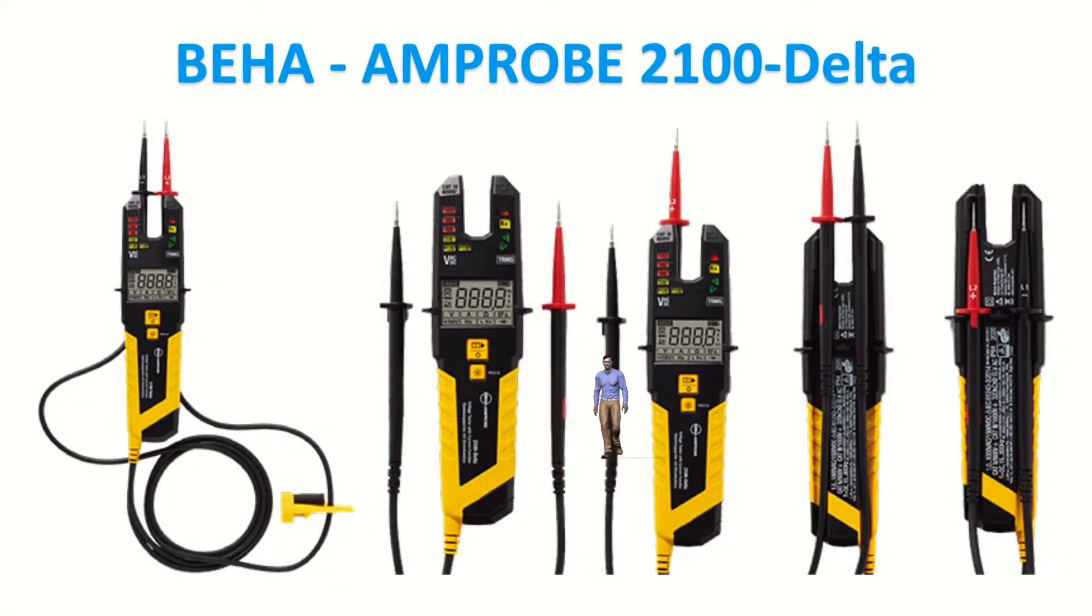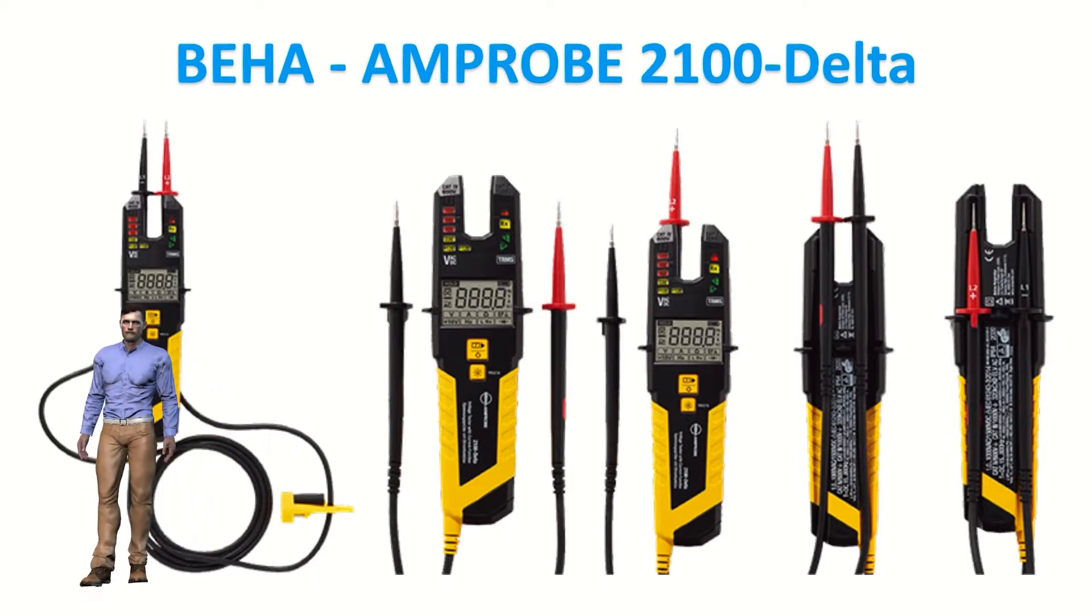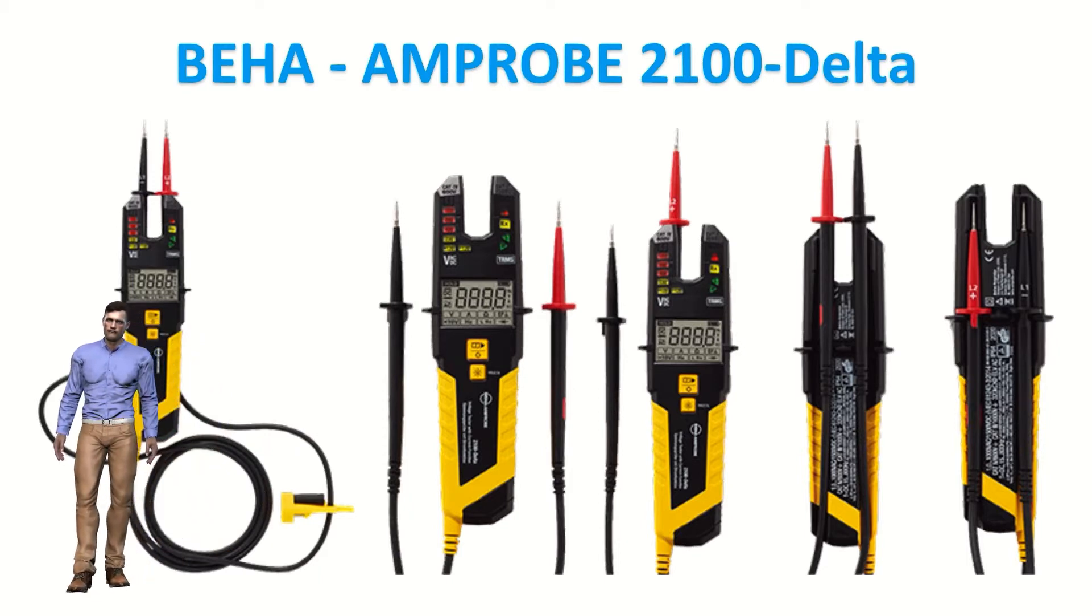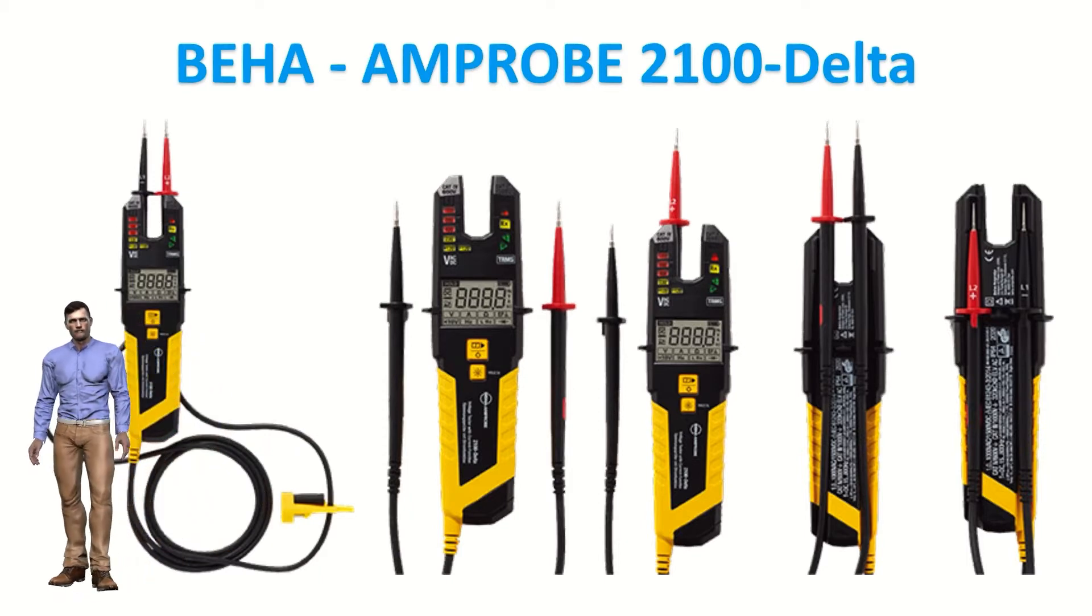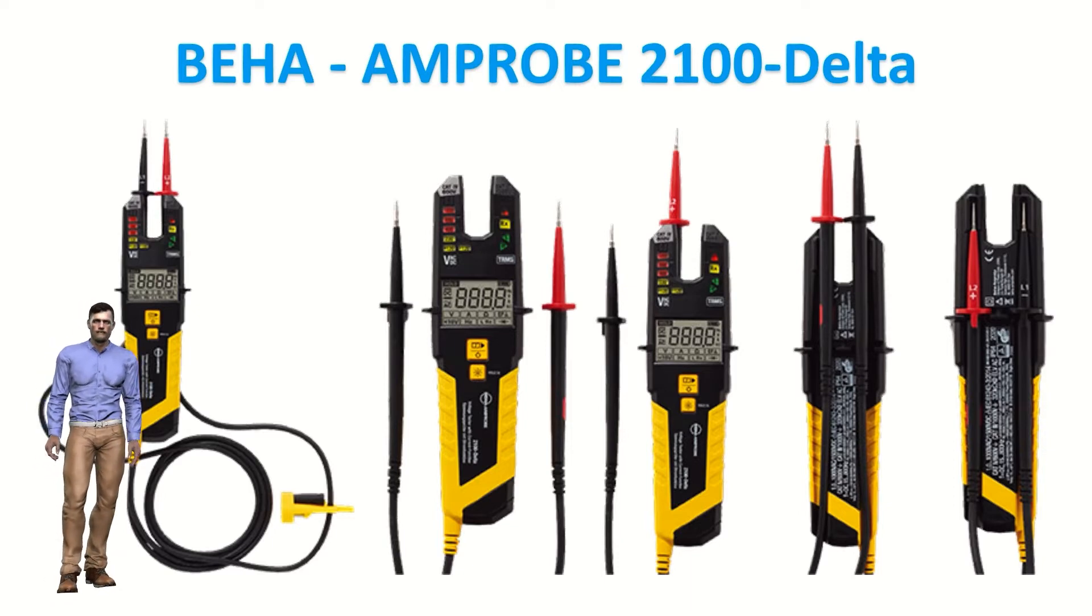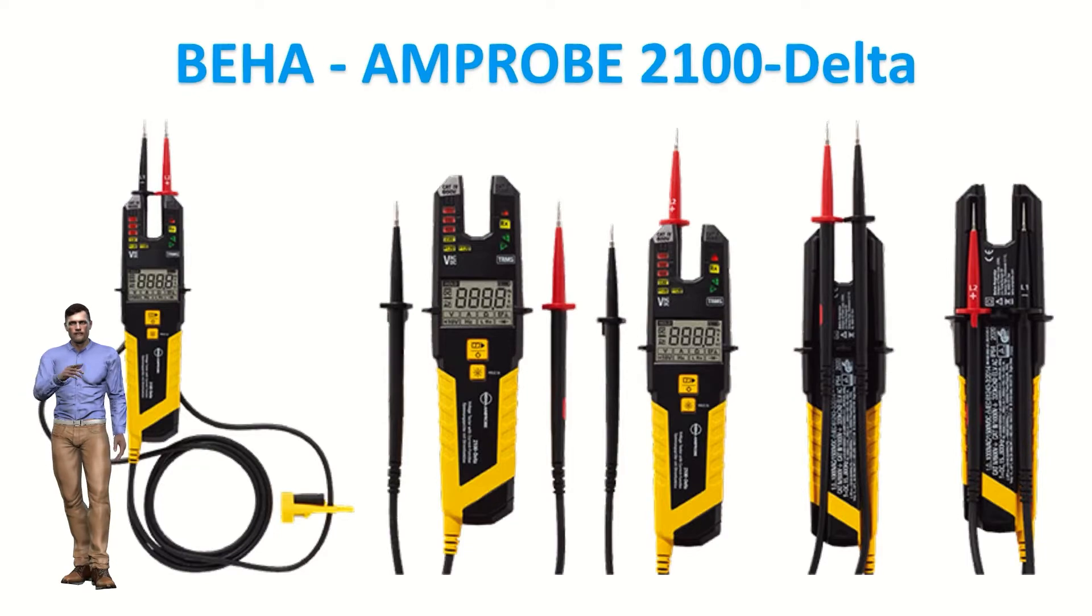Hello friends. In this video I want to present a review of the technical characteristics and functions of a new instrument that can be very useful. It is the Amprobe 2100 Delta instrument, a combination of an open jaw current clamp and true RMS voltage tester. My name is Robert and I hope this video is of interest to you, in which case do not forget to drop a like, subscribe to this channel and activate the notification bell.